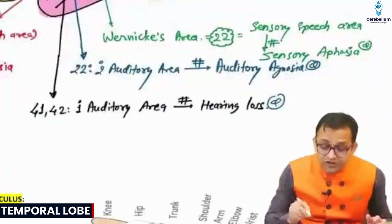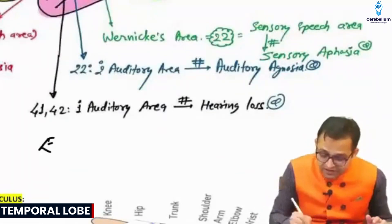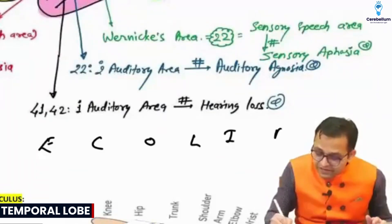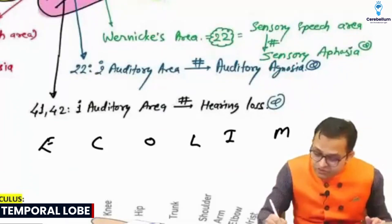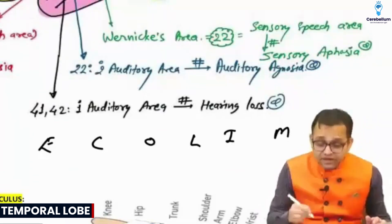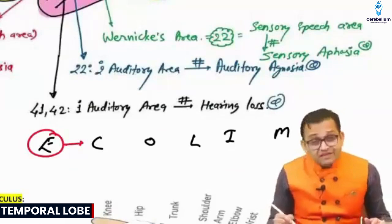You all know the auditory pathway in the ENT: E-Co-Li-Ma. Many integrated questions will be asked from our session, more than 100. E for 8th cranial nerve.